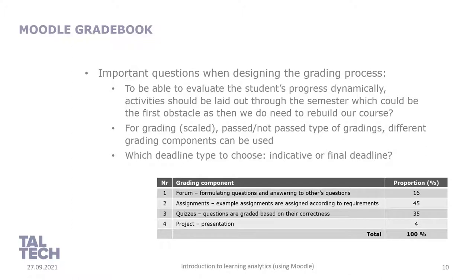To evaluate student progress dynamically, activities should be laid out through the semester or half-semester depending on the course subject. If we don't use activities throughout the semester in our Moodle course or in hybrid learning, it means we need to redesign our course — but this is quite okay, because once we start thinking about learning analytics, we need to enable it. For scaled or pass/not-pass type grading, different grading components can be used, along with deciding what deadlines to apply — indicative or final.